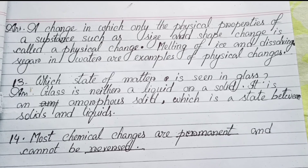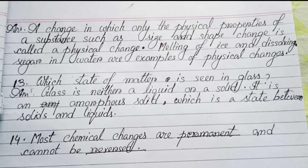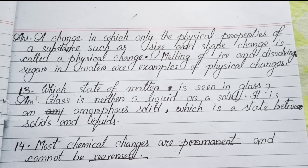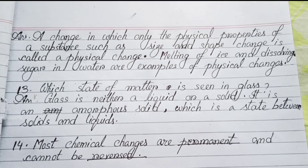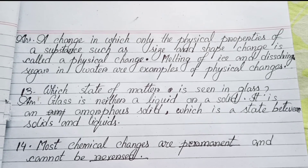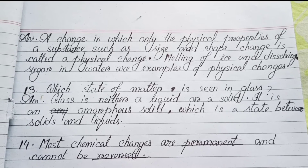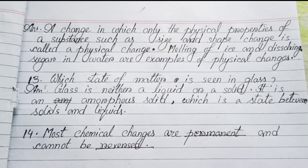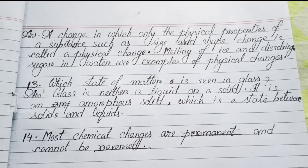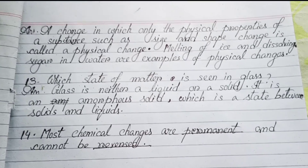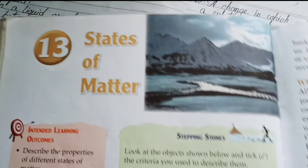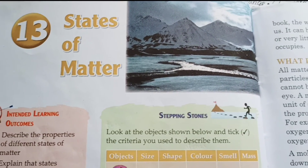Number 13: Which state of matter is seen in glass? Glass is neither a liquid nor a solid — it is an amorphous solid, which is a state between solids and liquids. Number 14: Fill in the blank — most chemical changes are permanent and cannot be reversed. So we have solved the chapter States of Matter.